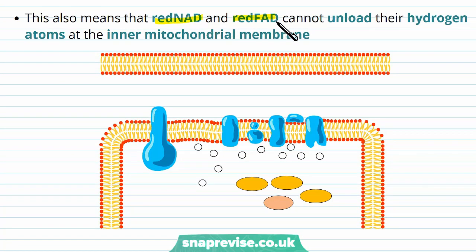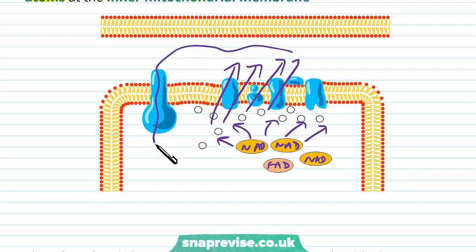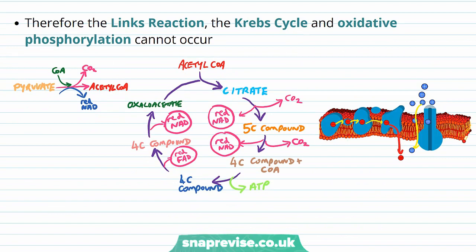Additionally, the reduced NAD and reduced FAD from other processes cannot unload their hydrogen atoms at the inner mitochondrial membrane. For chemiosmosis to happen, reduced NAD and FAD must unload their hydrogen atoms towards the inner membrane so they get sent to the intermembrane space to go down ATP synthase. But if the hydrogen ion concentration is already high due to no oxygen mopping them up, this unloading doesn't happen and they can't feed into chemiosmosis.